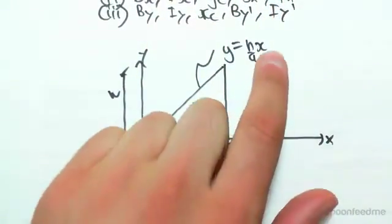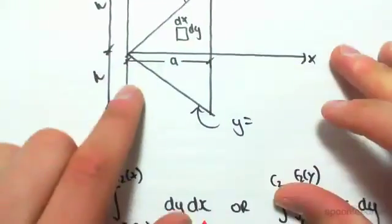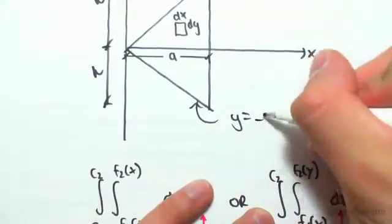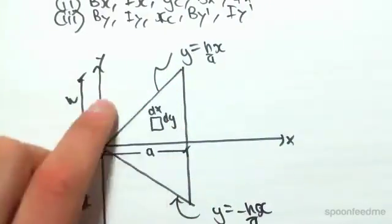And because there's no y-intercept, we don't have plus or minus anything there. This curve would be y equals the rise and the run, so we're going minus h down, a across, so it's going to be minus h on a, x. So those are those two curves.